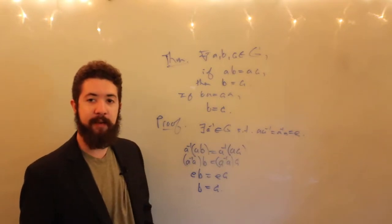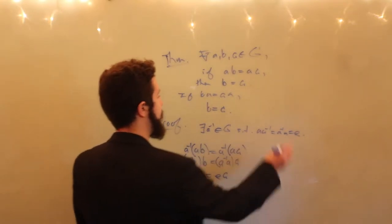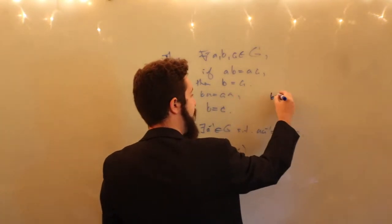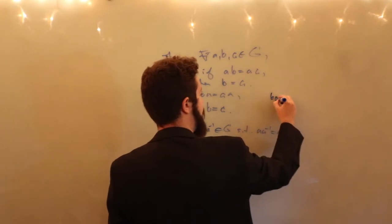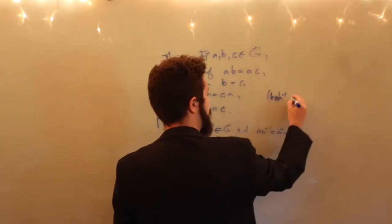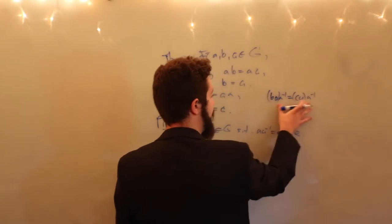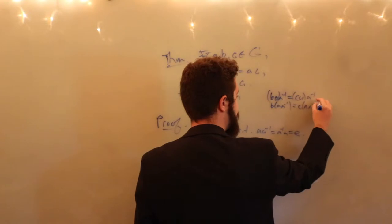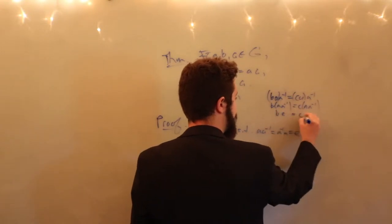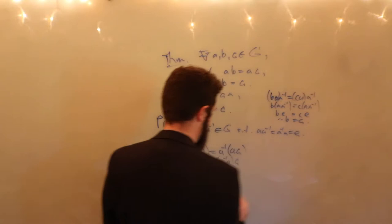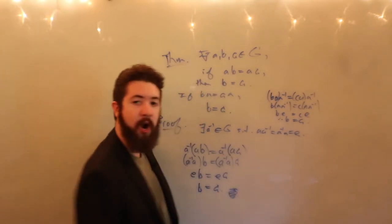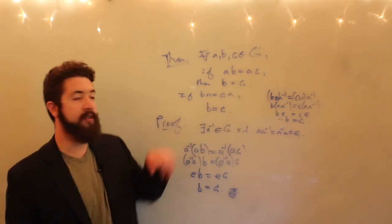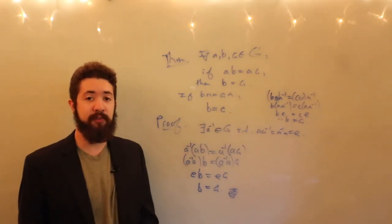Likewise, we do the same thing to prove right cancellation: we multiply on the right by A inverse, so that BA A inverse equals CA A inverse. By associativity, this is B(AA inverse) equals C(AA inverse), giving BE equals CE, and therefore B equals C. We have left and right cancellation holding in any group G.